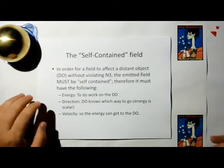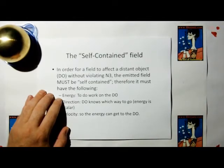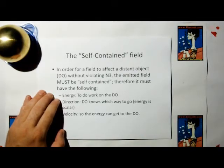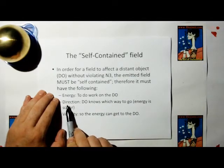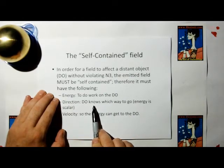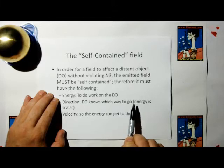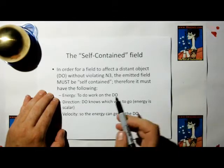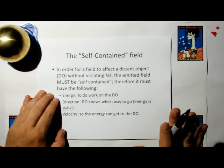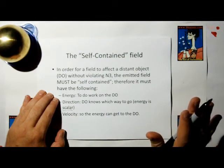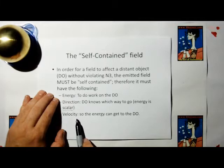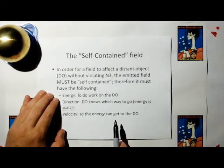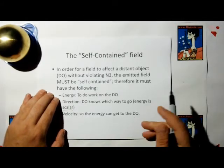So this is the idea of a self-contained field. In order for a field to affect a distant object without violating Newton's third law, the emitted field must be self-contained. Therefore, it must have all of the following to do the job. It must have energy to do work on the distant object. It must have direction. The distant object must know which way to go when it's struck by the energy because energy in itself is scalar. I don't buy into this Lagrangian nonsense that is the basis of quantum mechanics. It also must have velocity so that the energy can get from point A to point B or hit the distant object.